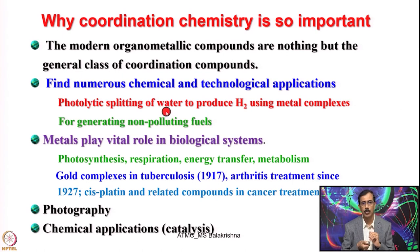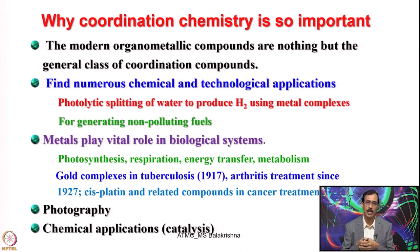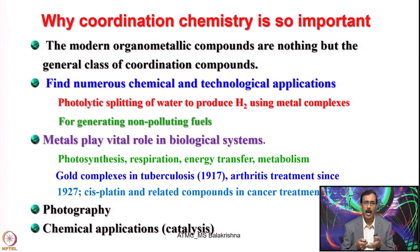For example, if you want to split water photolytically to produce H2 with renewable energy in mind, you have to go for metal complexes. Also for generating non-polluting fuels, and we all know that metals play a vital role in biological systems. We talk about metalloenzymes — enzymes observed in plants as well as living beings have no identity if the metal present in their system is taken out, indicating the importance of metals in biological systems.